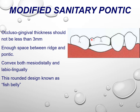The modified sanitary pontic has increased gap; the occlusal-gingival thickness should not be less than 3 mm to allow enough space between the ridge and the pontic. It is convex both mesiodistally and labiolingually. The design resembles a fish belly shape and is known as a fish belly pontic.